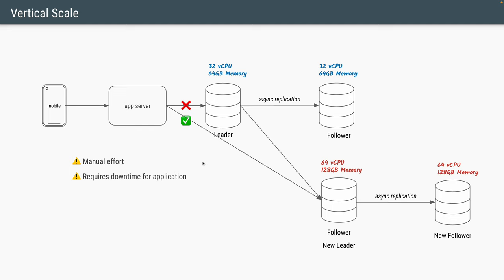We have these two problems to solve. One straightforward way is to vertically scale our database — for example, if our primary database had 32 CPU cores and 64 GB of memory, we can upgrade that to 64 CPU cores and 128 GB of memory. Again, this is not very straightforward. This whole operation is a very manual effort and requires downtime for the application. So every time we have to make any changes to our database, we have to restart our application service.